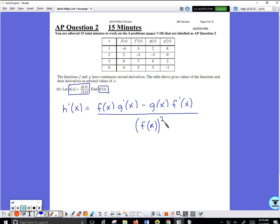Okay, if you get that far they'll give you one point. Now we're supposed to plug in x equals one, so we write: h'(1) equals f(1) times g'(1) minus g(1) times f'(1), all divided by f(1) squared. They'll give you one more point if you have that written on your paper.